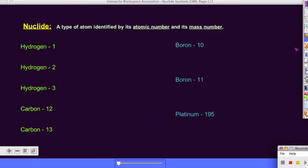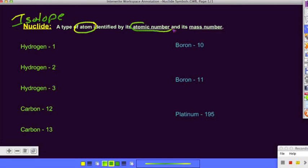Here we have the basic definition of a nuclide, which is another term for isotope. We're going to identify an atom with its atomic number and its mass number.